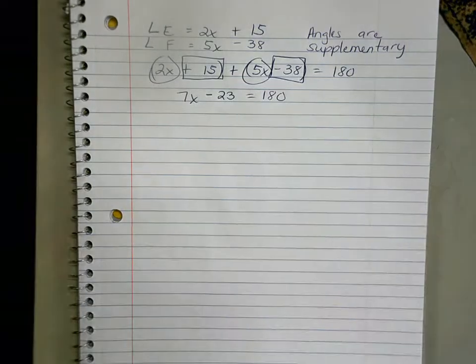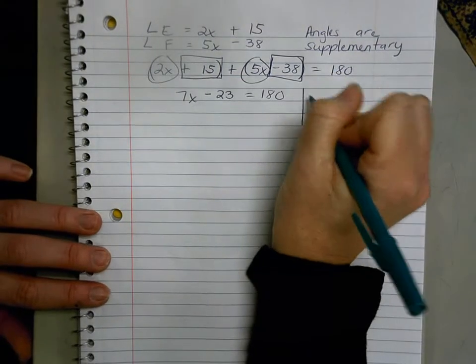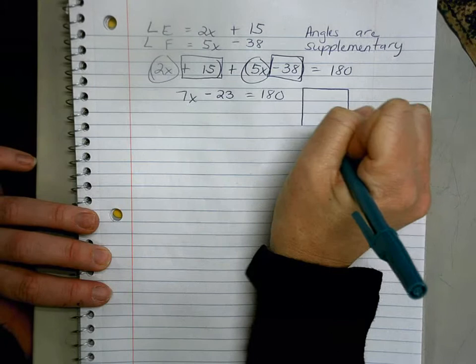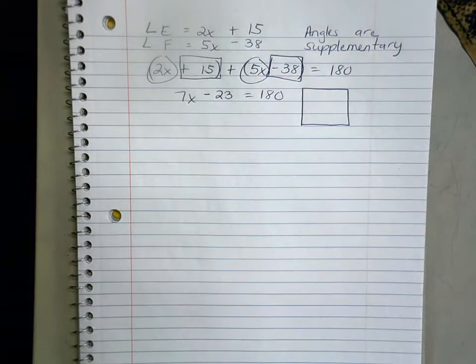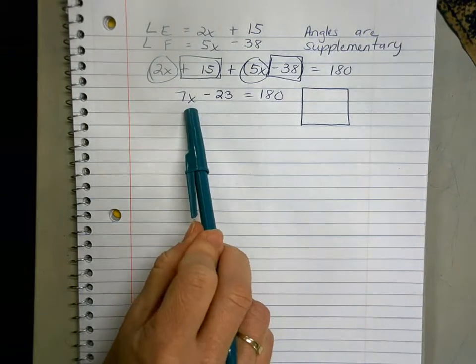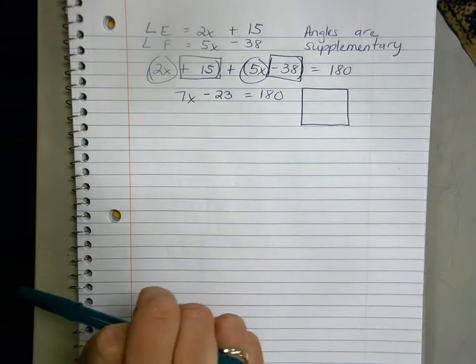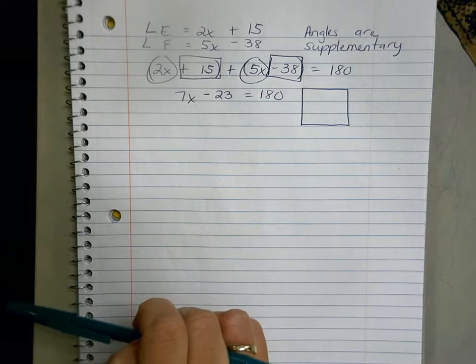But what we're trying to do is isolate x by getting rid of all the stuff around x, and by doing that we can do opposite operations.